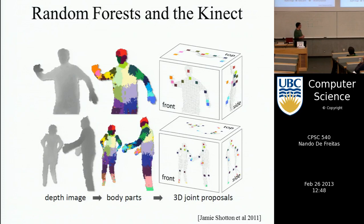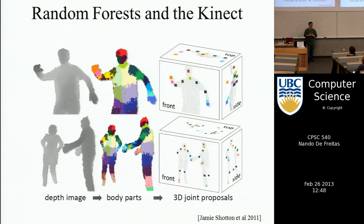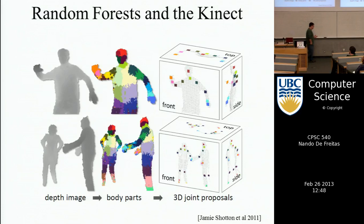This is a high-profile application — although the random forest aspect isn't playing up all that much — but Microsoft Kinect. In case anybody doesn't know, it's a device that hooks up to your Xbox; it's got a camera that watches your living room and you get up and wave at your television, jump around, and you can control video games that way, instead of sitting on your couch pressing buttons.